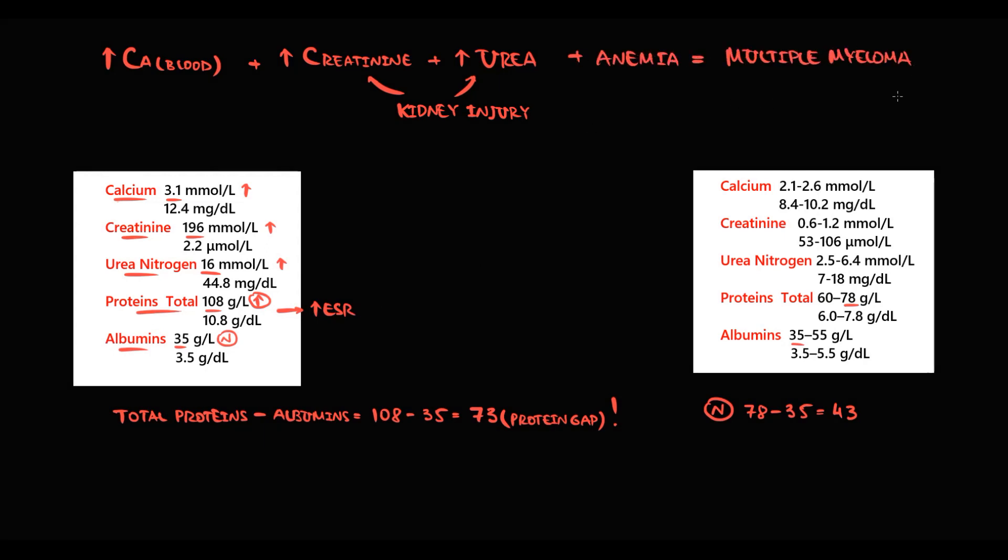Increasing blood calcium is most probably caused by bone injury. Increasing creatinine and urea is caused by kidney injury. Kidney injury is most probably also responsible for anemia. So we have three out of four signs of multiple myeloma, which constitutes CRAB criteria. The last criterion is bone injury, and for this we would prescribe an X-ray.